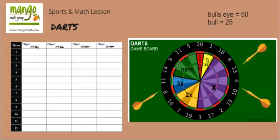The child will spin twice or three times per turn. The first spin tells you what the multiplier is — either times three, times two, times one, a miss, a bullseye, or a bull. If you get a miss, you don't get a second spin and just move on to the next dart. If you get a bullseye or a bull, you don't spin again because you already have a point value for those.